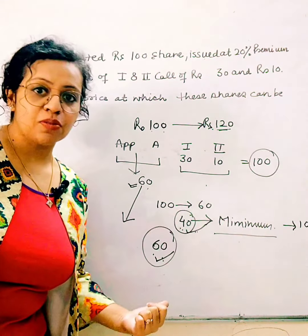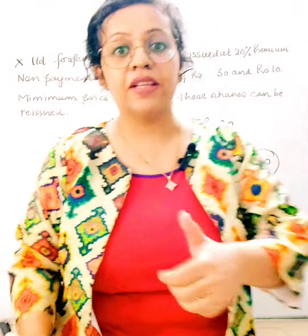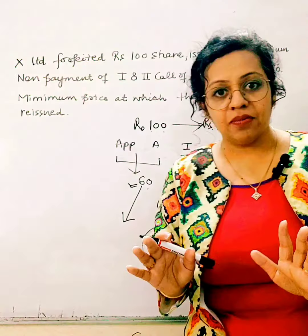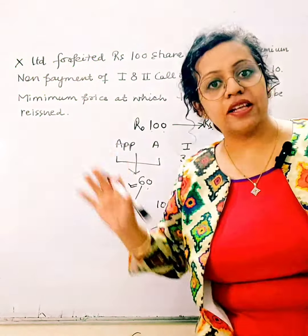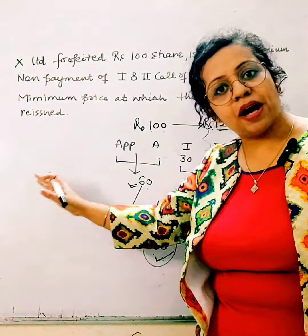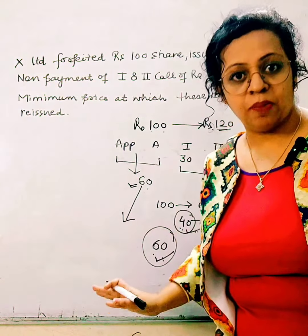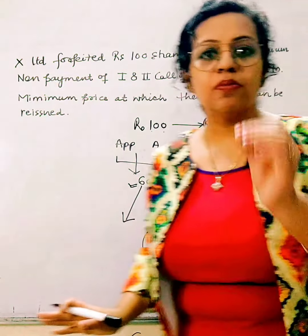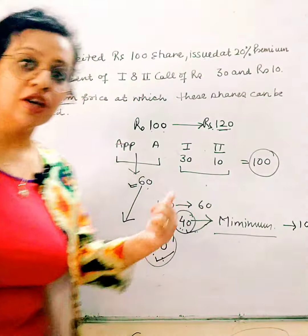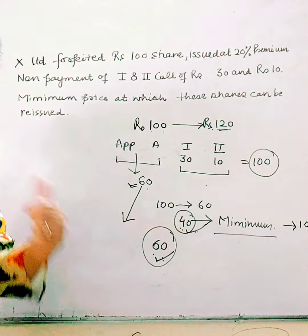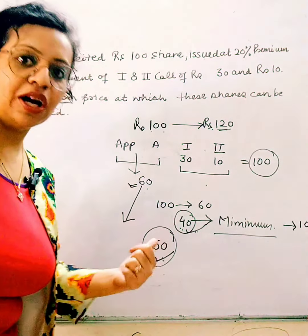This is a short question. If you have 3 sets, you will get both the minimum price and the maximum discount questions. Note these points and practice. If you do, it will come easily. Thank you.